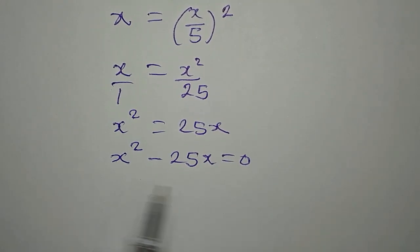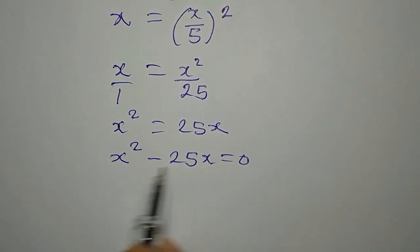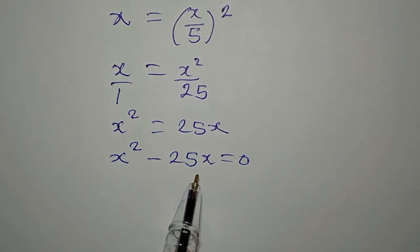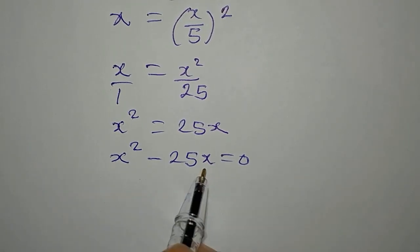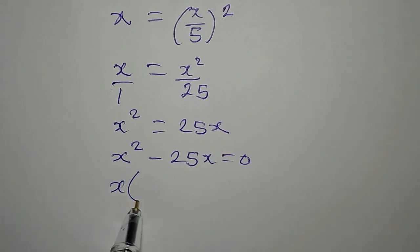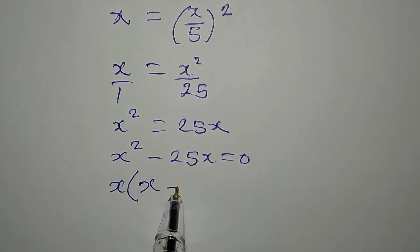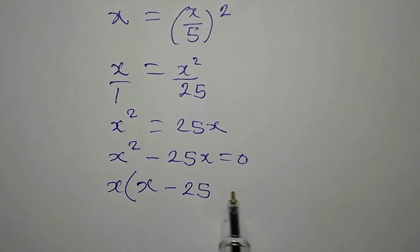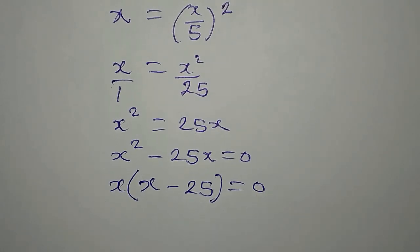Now, from here, we have a common factor. This is quadratic. This is a quadratic equation. And we have the common factor of x. Then here, we have 1x minus here, we have 25. Then everything is equal to 0.